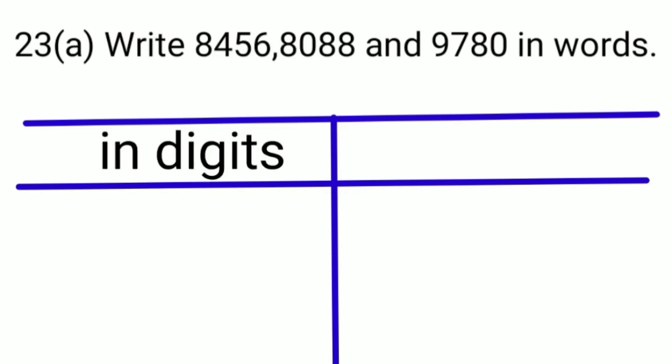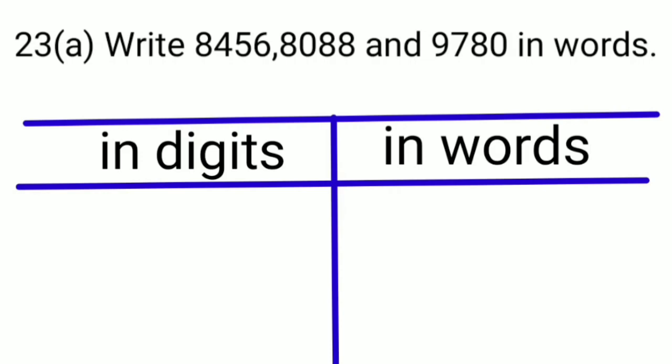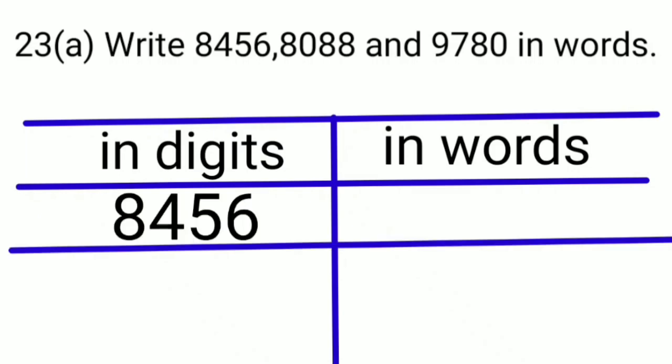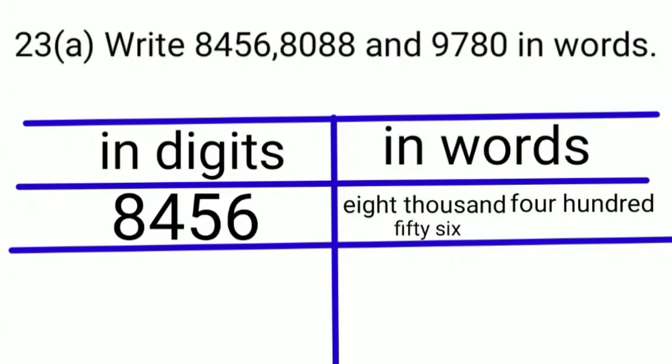Question 23, part A: we have given some numbers and we have to write these numbers in words. We will read these numbers and then write them in words — one side in digits and the other side in words. In our first number, 6 is at the ones place, 5 is at the tens place, 4 is at the hundreds place, and 8 is at the thousands place. So we speak and write this number as 8,456.